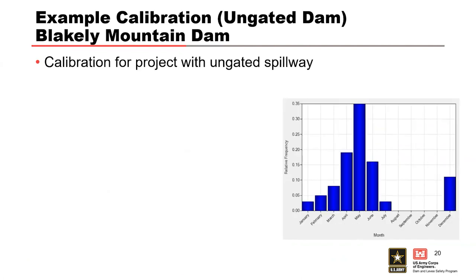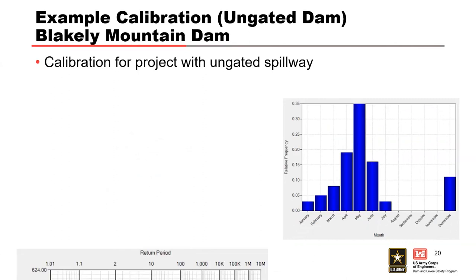For this example, flood seasonality based on stage was calculated using the largest 75% of the annual maximum stages, for a total of 37 events. When this is done, there's an improvement in the match, especially at the more frequent end. There's still a difference between the model curve and the observed events for the very most frequent events. However, since we're most interested in the infrequent events or the largest floods, those minor differences are acceptable.